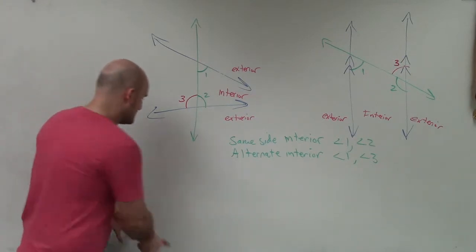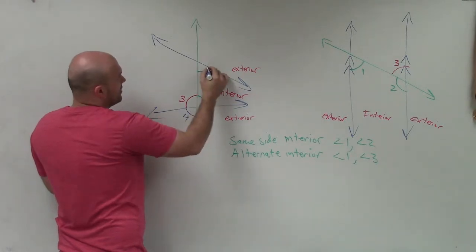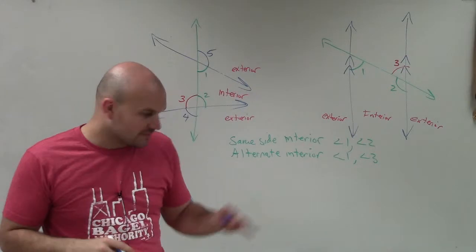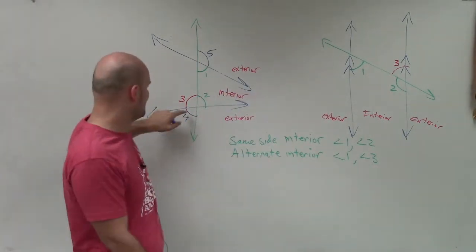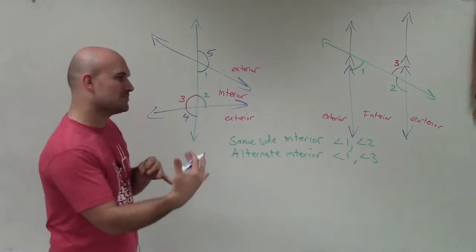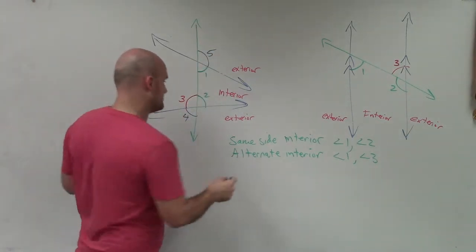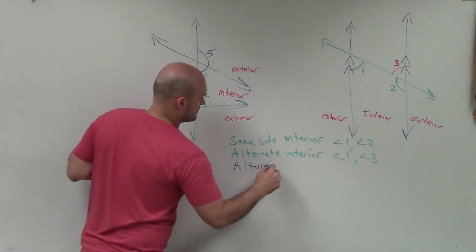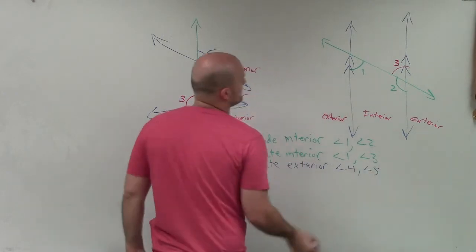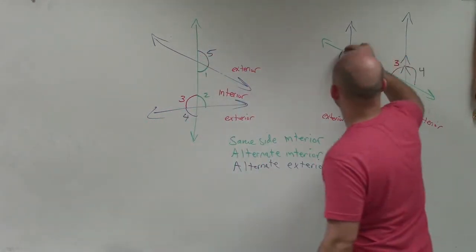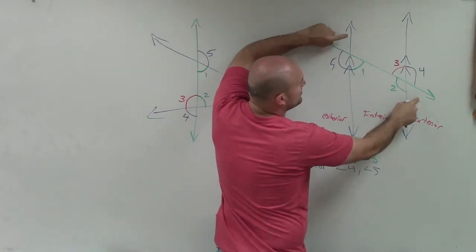The next one is alternate exterior. Alternate exterior angles are two angles that are exterior and on opposite sides of the transversal. For example, angle four and angle five. These are going to have a special relationship that we want to make sure we remember. There are more pairs — you could also use these two angles, which are also on opposite sides and both exterior.